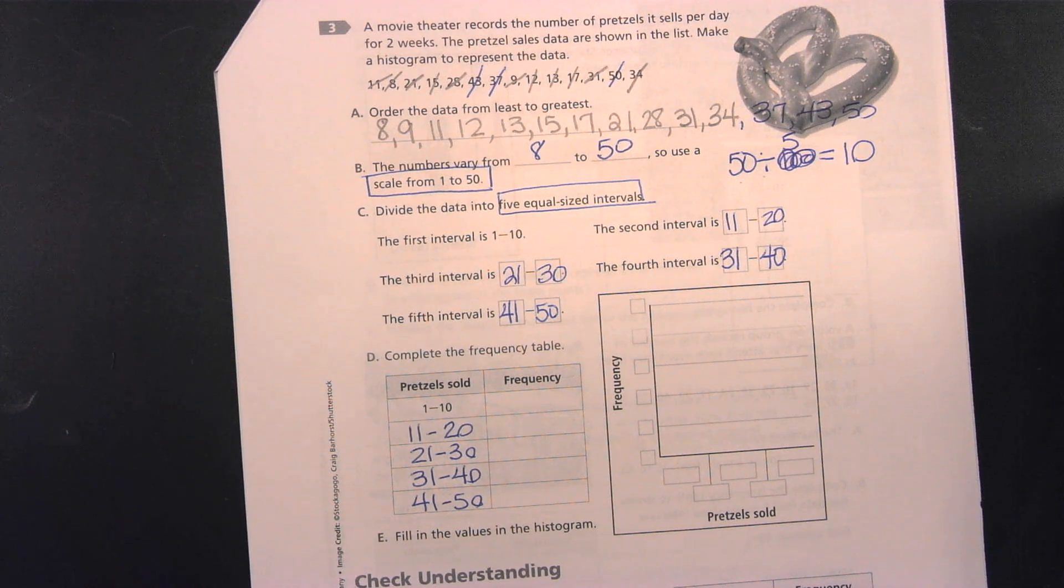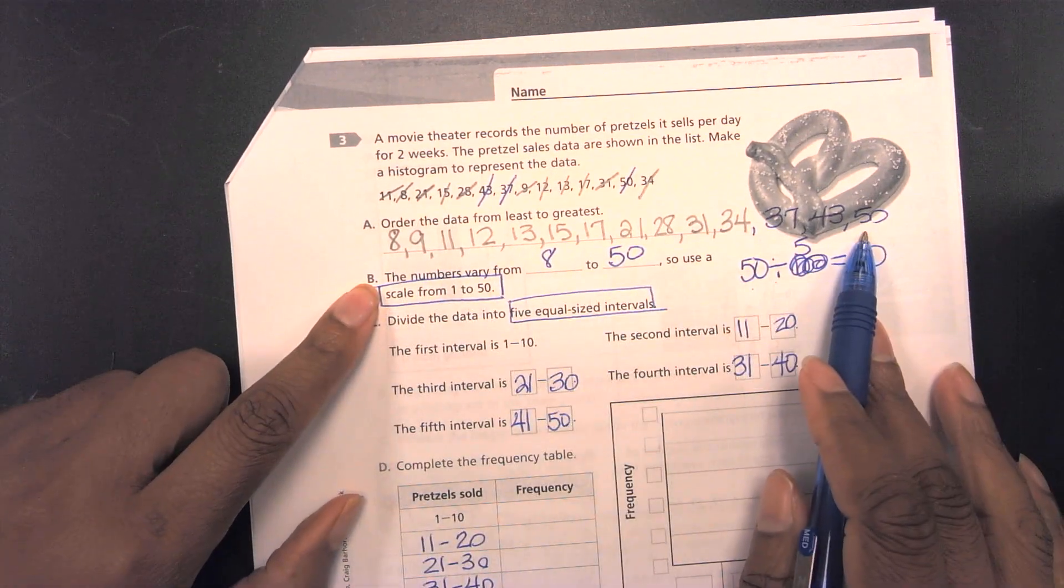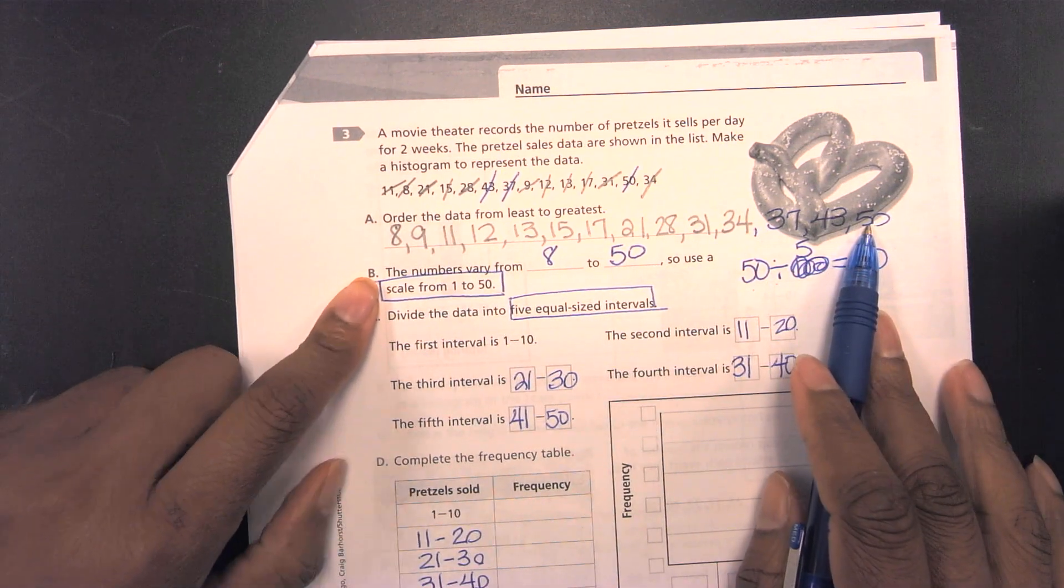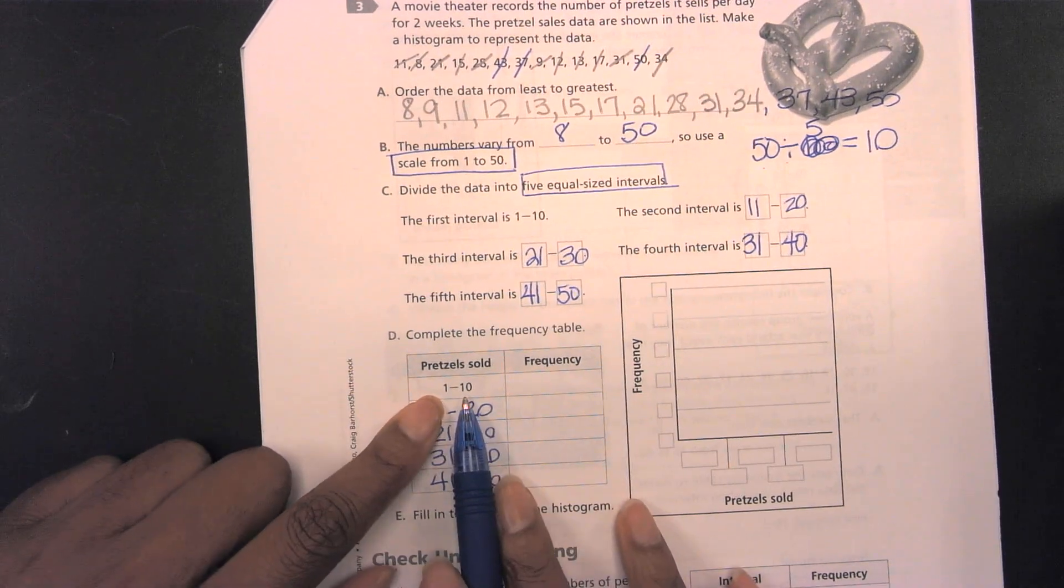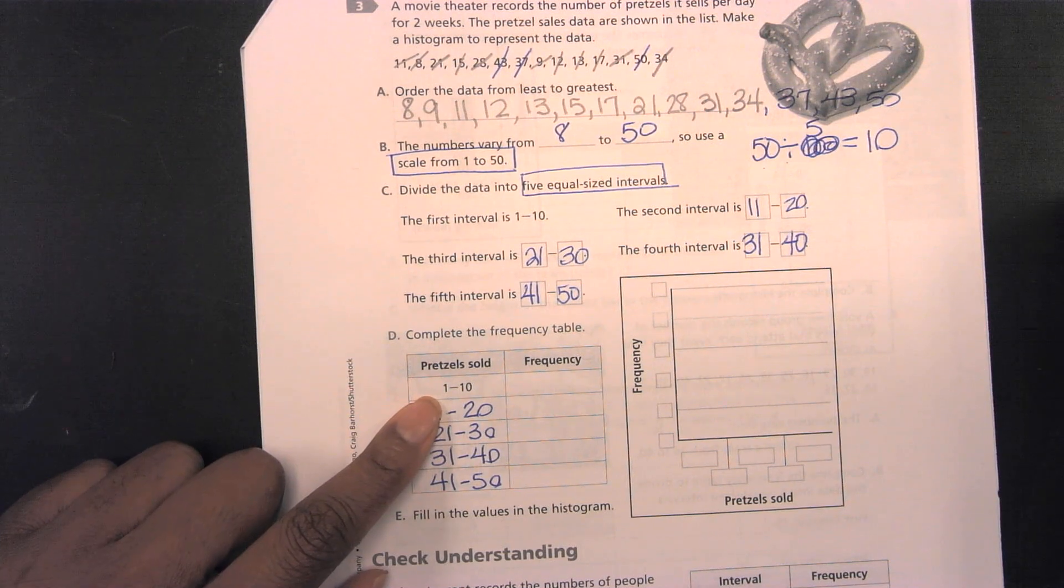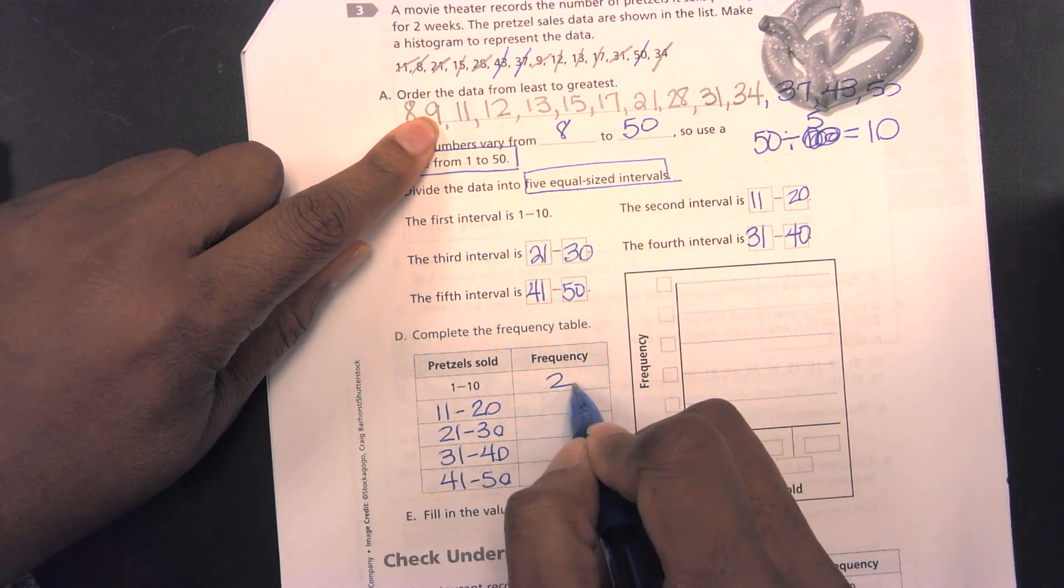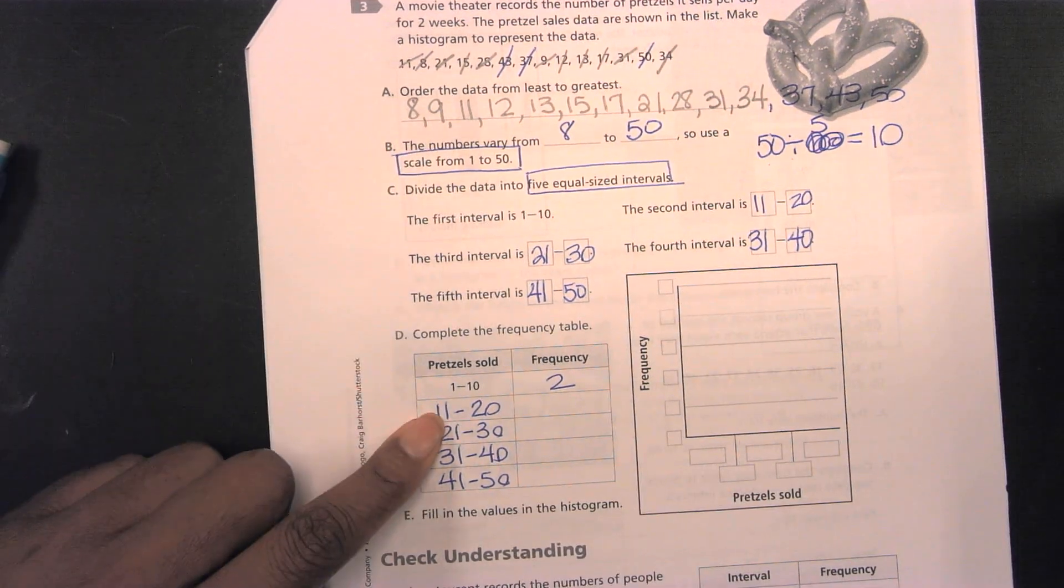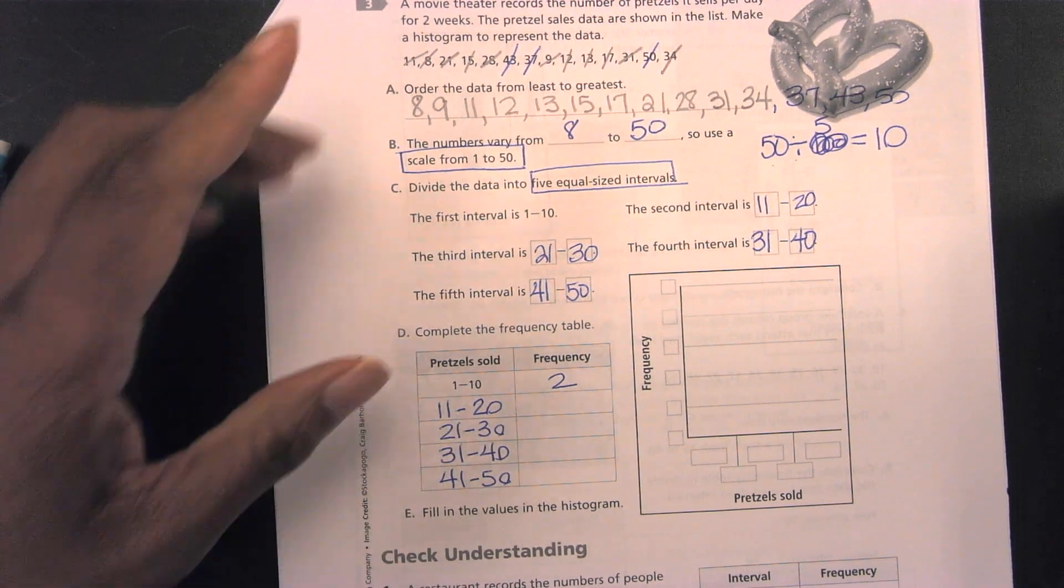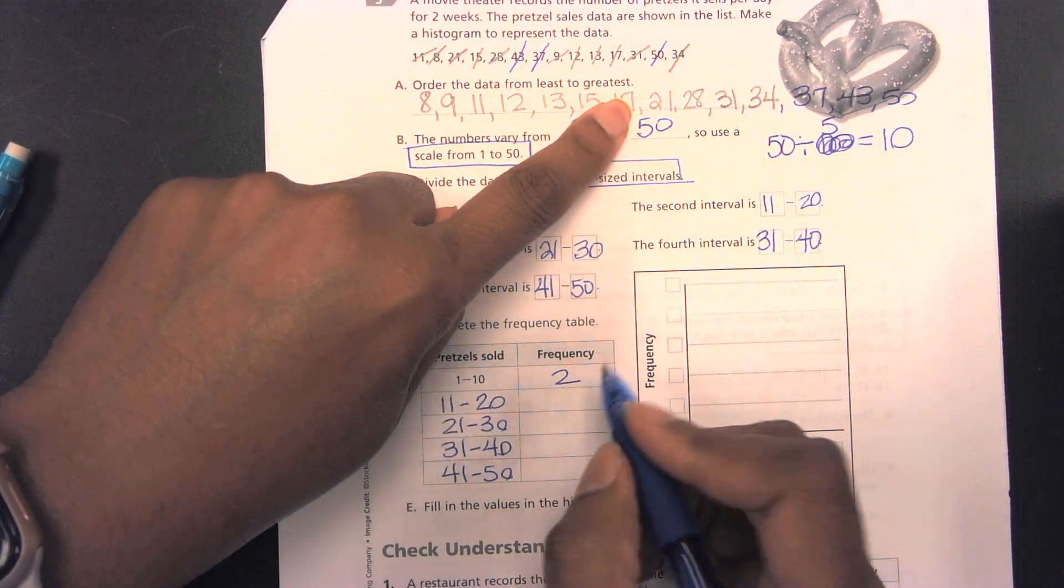In order for me to determine the frequency, I have got to go back up here and look at the numbers that we used in our data. So, with that being said, how many numbers appear between the 1 to 10 mark? 2. The two numbers are 8 and 9. So, you will write a 2 as a relation for the frequency. How many numbers appear between the 11 to 20 mark? Okay, she says 5. Let's see. 1, 2, 3, 4, 5. That is correct.